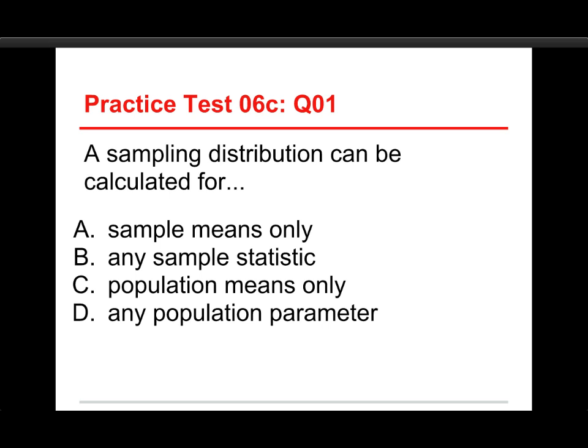The first question on this is: a sampling distribution can be calculated for A, sample means only, B, any sample statistic, C, population means only, or D, any population parameter. Well, the answer to this one is any sample statistic.